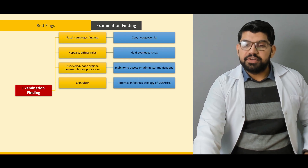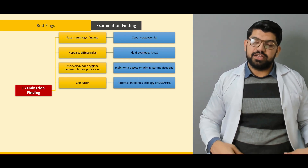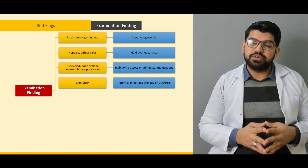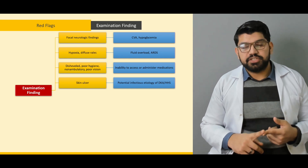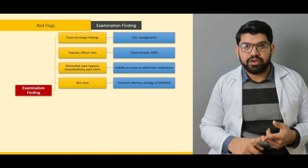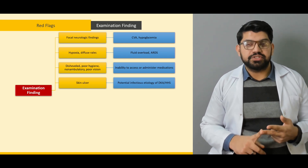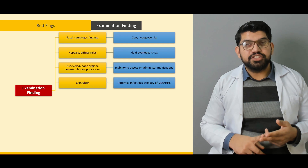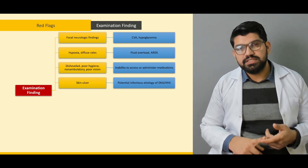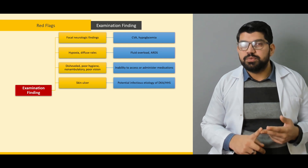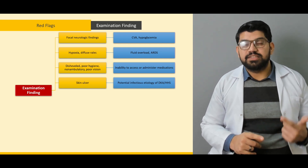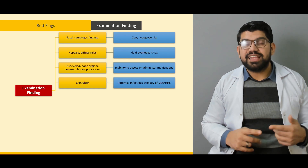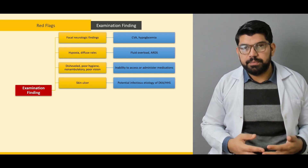Skin ulcers are a potential infectious etiology of DKA and hyperosmolar hyperglycemic state. Skin ulcers — especially in patients with prolonged diabetes or diabetic foot — are important to notice. These patients are prone to injury because of necrosis, irreversible changes, and vascular problems due to diabetes. Due to neuropathy, these patients can present with infections. Skin is the most common site, and recurrent skin infections can exacerbate diabetic ketoacidosis and hyperosmolar hyperglycemic state.